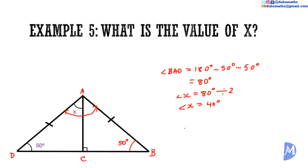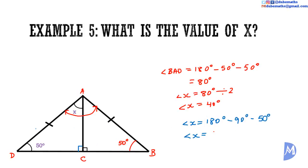This is a perpendicular line from the base to the apex, so this angle is 90 degrees and this angle is also 90 degrees. With that knowledge, considering triangle ACD, the three angles add to 180 degrees, so we could work out X as: angle X equals 180 minus 90 minus 50 degrees. Using this second method, angle X is also equal to 40 degrees.